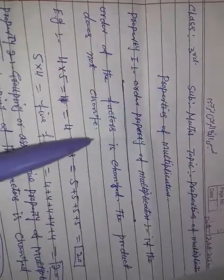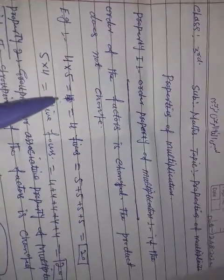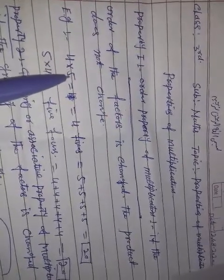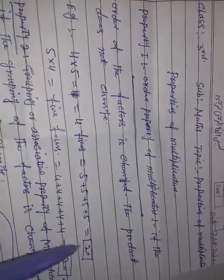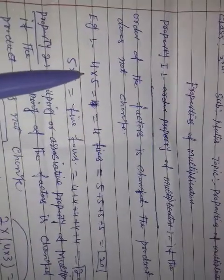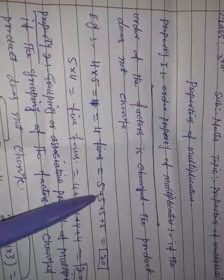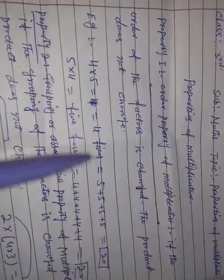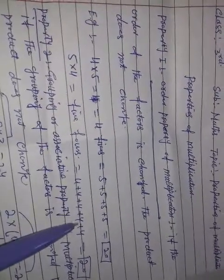If the order of the factors change, the product does not change. 4 into 5 is 20, or 5 into 4 is 20. Let's see, 4 into 5, so 4 fives is 20. Let's go to 5 into 4, so 5 fours is 20.